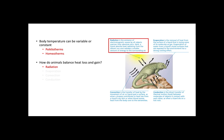Even though animals can obtain heat from their own metabolic activity or from external sources, body temperature is not always constant and can show significant variability. This brings us to another classification: animals which are poikilotherms, having their body temperature vary with the environment, or homeotherms, which keep a relatively constant temperature regardless of environmental conditions.